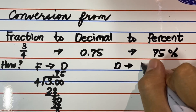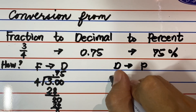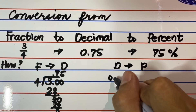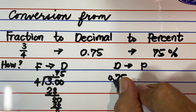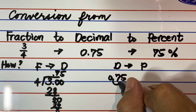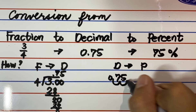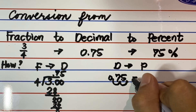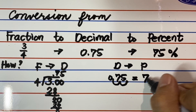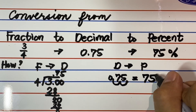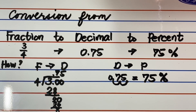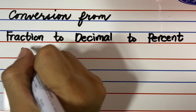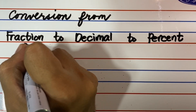How do we convert 0.75 or 75-hundredths to percent? We simply move the decimal point two places to the right, then affix the percent sign. Watch and learn. 0.75 or 75-hundredths becomes 75%. Another example.